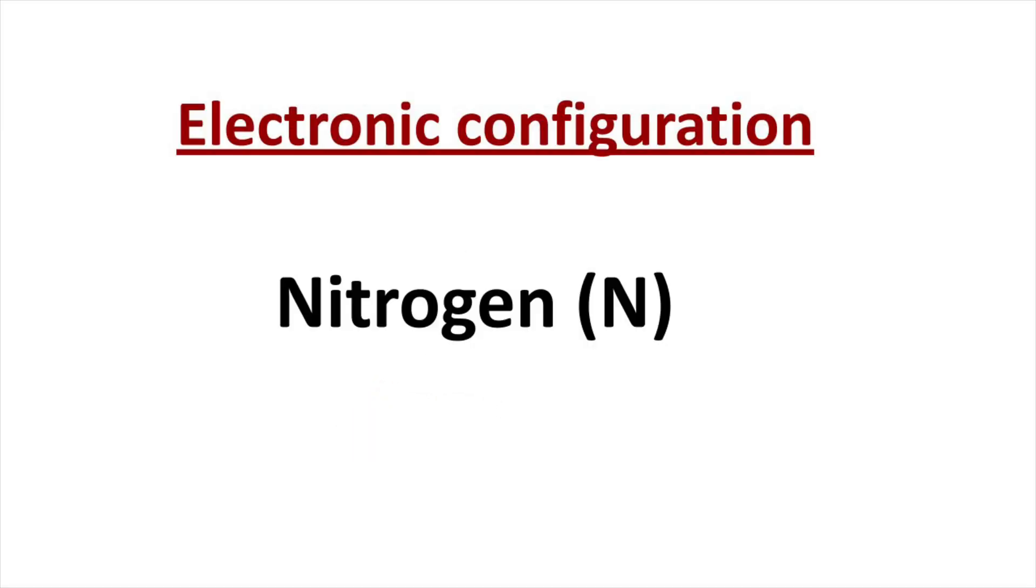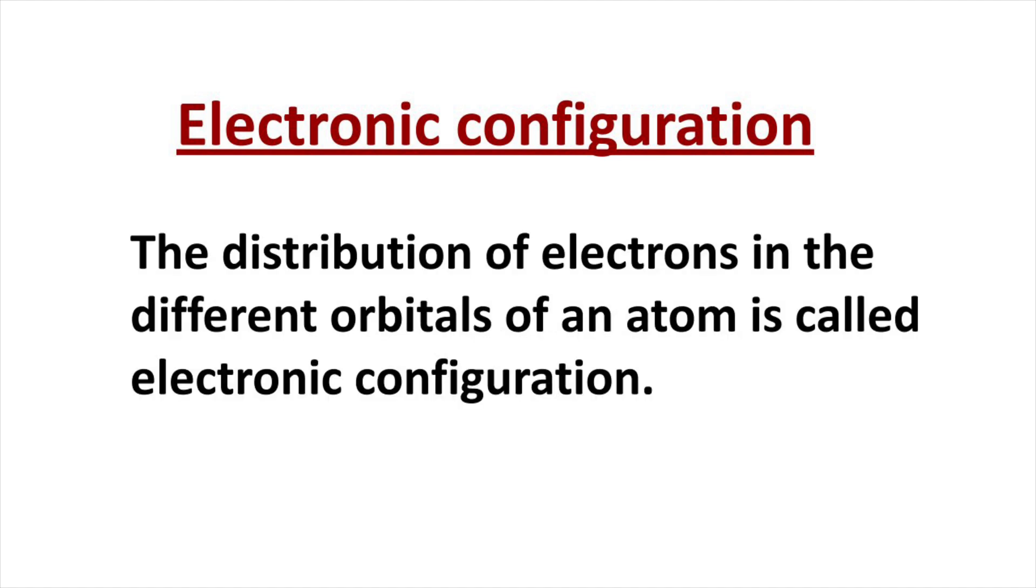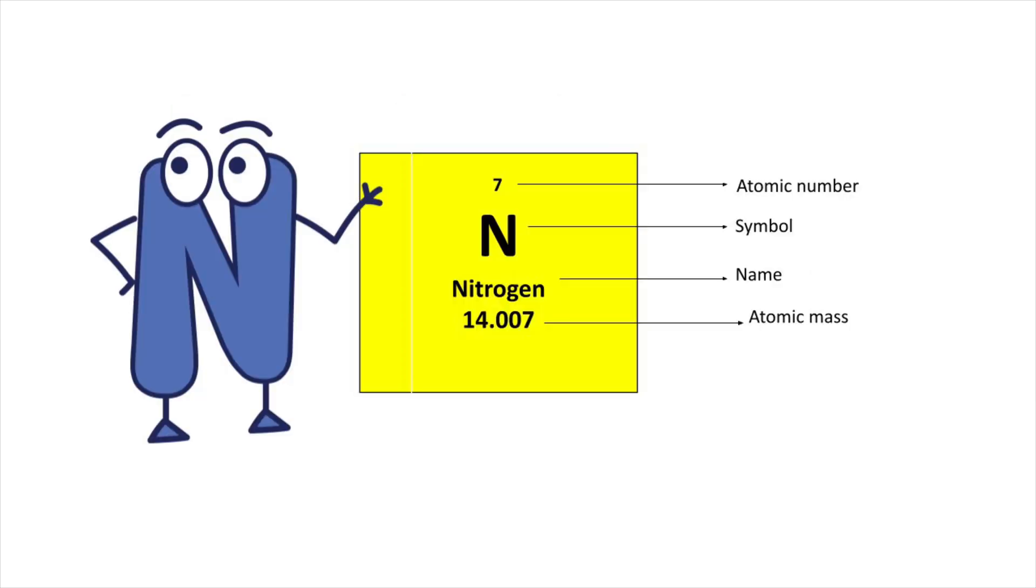Welcome to Aurora chemistry for everyone. The distribution of electrons in the orbital of an atom is called electronic configuration. To write electronic configuration we should know the atomic number.